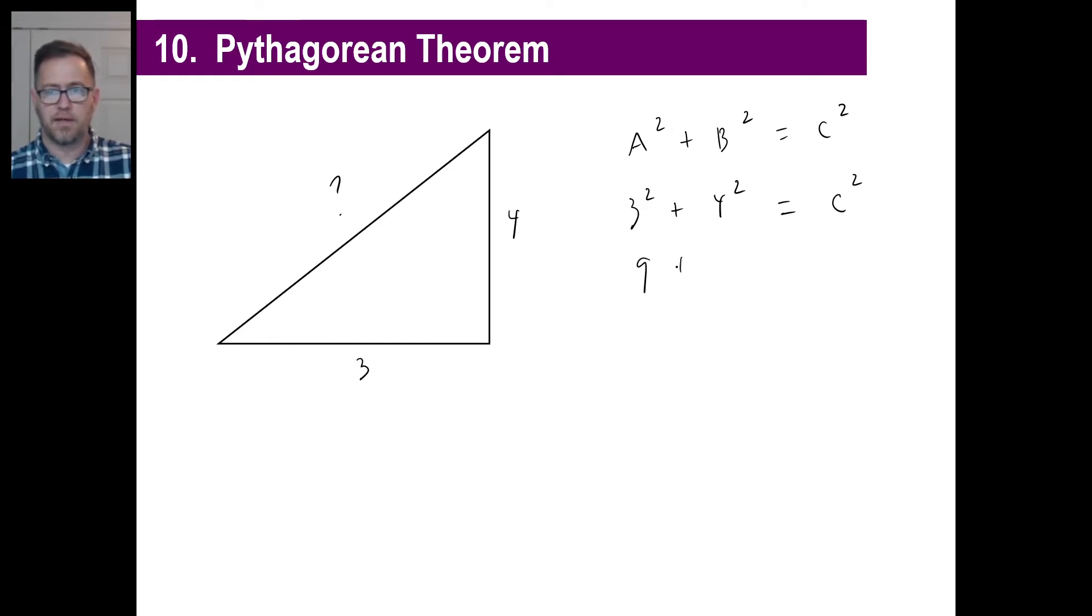3 squared, of course, is 9. 4 squared is 16. That equals this side squared. 9 plus 16 is 25. So, okay, what number squared gives you 25? And, of course, the answer is 5.